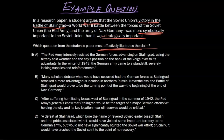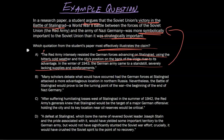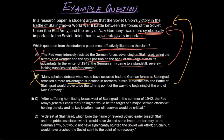Let's take a look. Does the first choice really think about symbolically? No — it's describing how the war was fought, describing the Battle of Stalingrad itself, so that's not the correct answer. The next one: most scholars debate what would have occurred if the German forces attacked at a more advantageous location — that's not related to this at all, not the answer. After suffering humiliating losses west of Stalingrad, the Red Army's generals knew that Stalingrad would be the target of a major... Nope, we're not talking about how important it was symbolically or strategically.